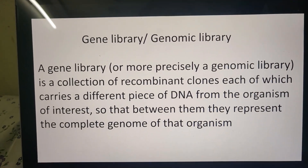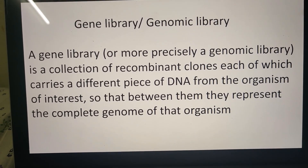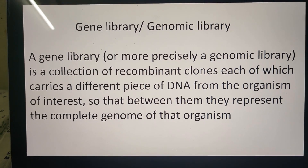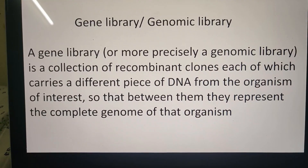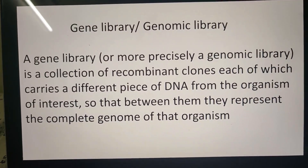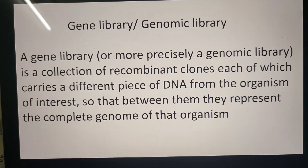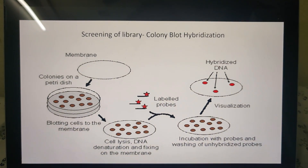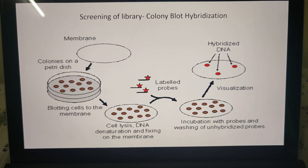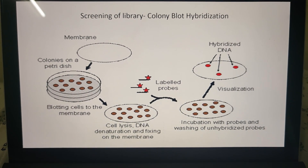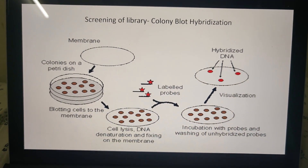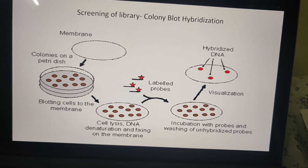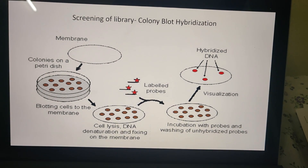We can define the genomic library as the collection of recombinant clones, each of which carries a different piece of DNA from the organism of interest, so that together they represent the complete genome of that organism. The next question is: how to screen a particular clone? Suppose we want to select one particular clone carrying a particular fragment of DNA — how do we do that?